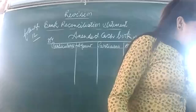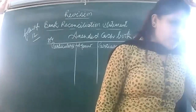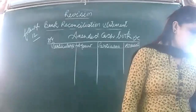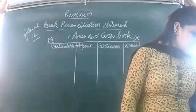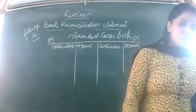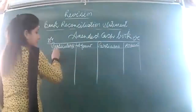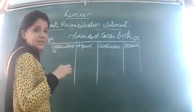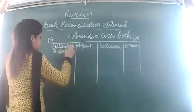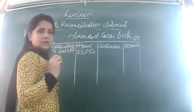On examining the bank passbook of Nitram Limited, it is found that the balance shown on 31st March 2018 — the closing date of the company's financial year — differs from the bank balance of rupees 23,650 shown by the cash book on that date. The cash book shows a positive balance, so I will write 'balance brought down' — that is, bank balance — rupees 23,650.